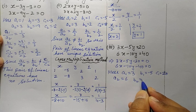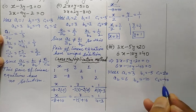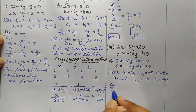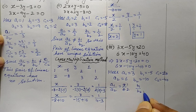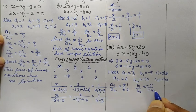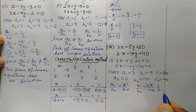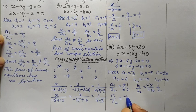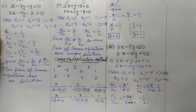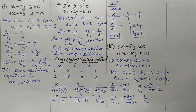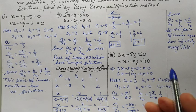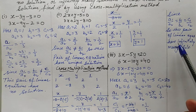Now a1/a2 = 3/6 = 1/2, b1/b2 = −5/−10 = 1/2, and c1/c2 = −20/−40 = 1/2. Since a1/a2 = b1/b2 = c1/c2, the lines are coincident. Therefore this pair of linear equations has infinitely many solutions.